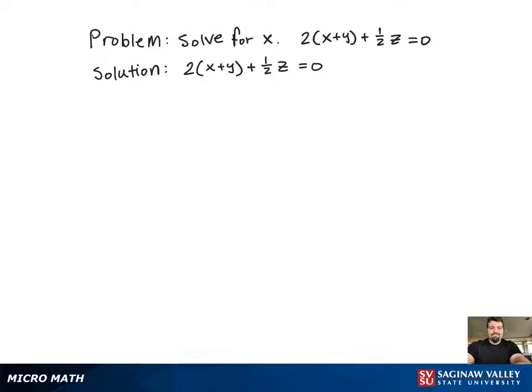So since I want to solve for x, the first thing I want to do is get the x term by itself. So I'm going to subtract the one half z to the other side.